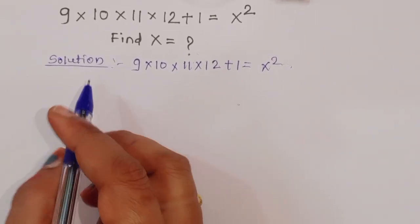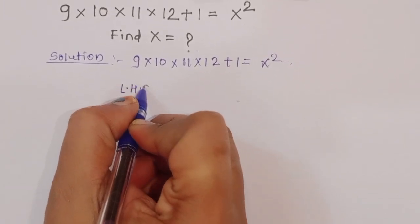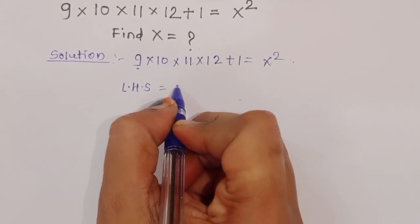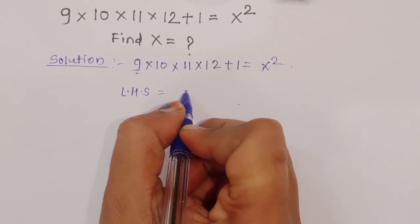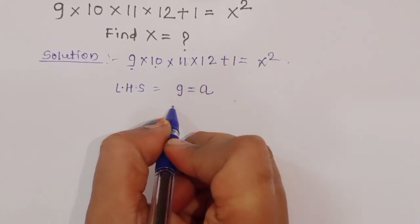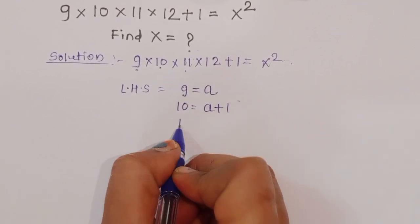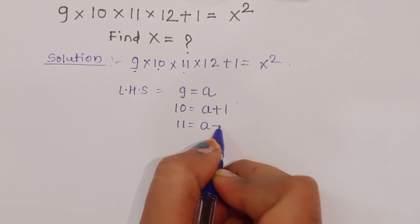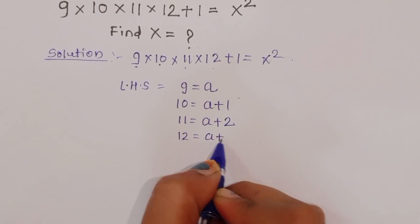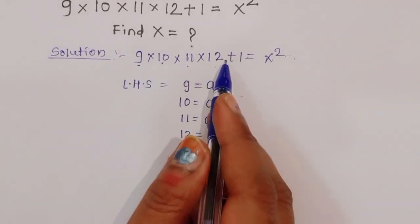Now consider the LHS. We assume 9 is equal to a. Then 10 is equal to a plus 1, 11 is equal to a plus 2, and 12 is equal to a plus 3. Putting these values into the equation.